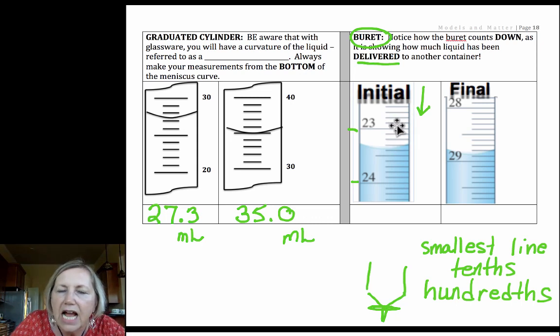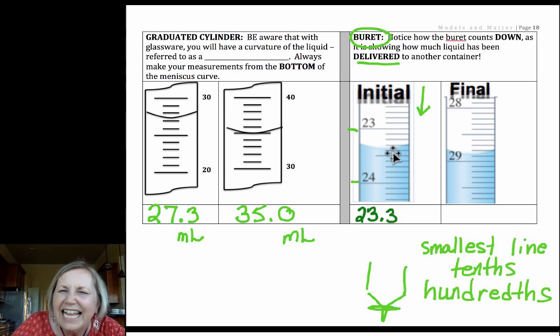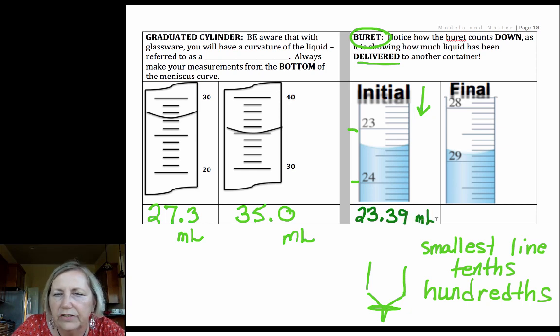You read it exactly as it is on the burett. So in this case, I know that it's below the 23, but above the 24, so I know it's 23 point something. And again, you read at the bottom of the meniscus. So I have 23, then 1, 2, 3, 4. It's between the 3 and the 4. I'm going to call that a 3. It's not quite all the way down to the 4. So I'm going to call that about a 3, which is 23.39 milliliters, if you read that according to the bottom of the meniscus.